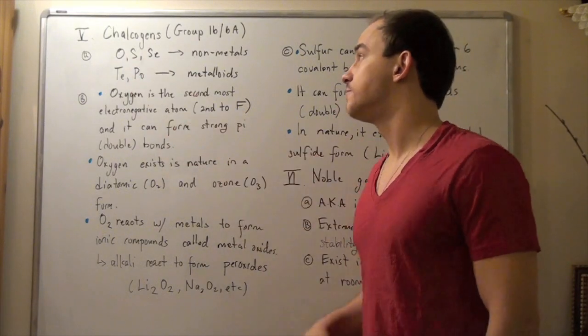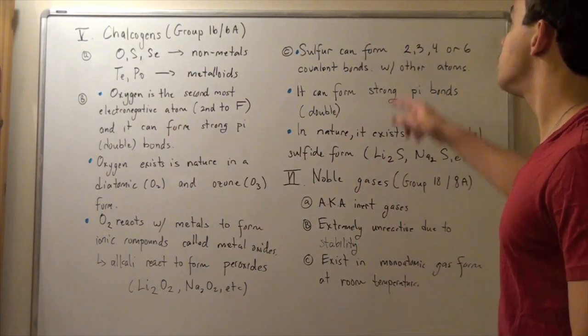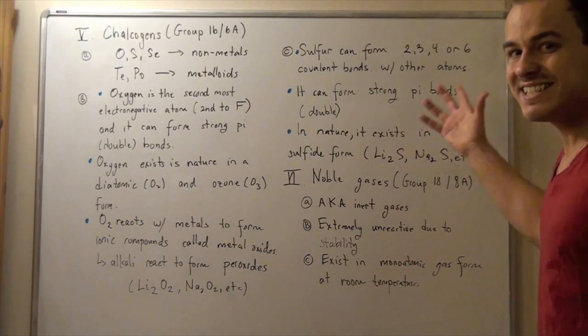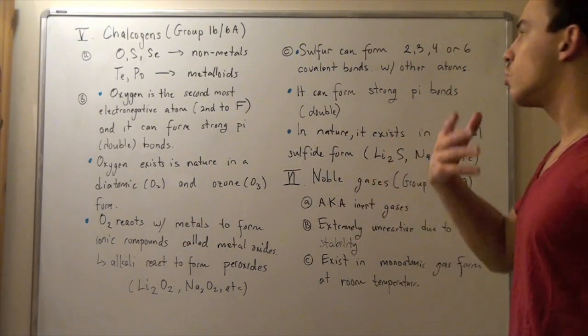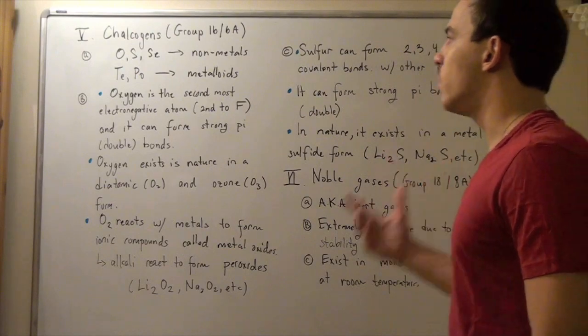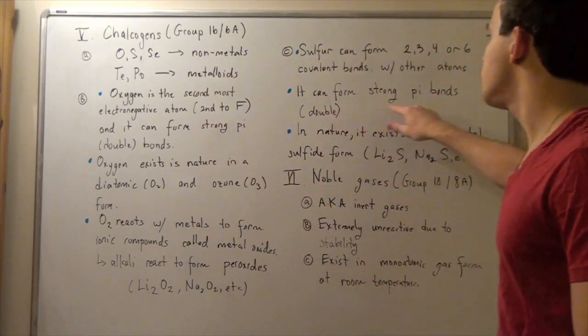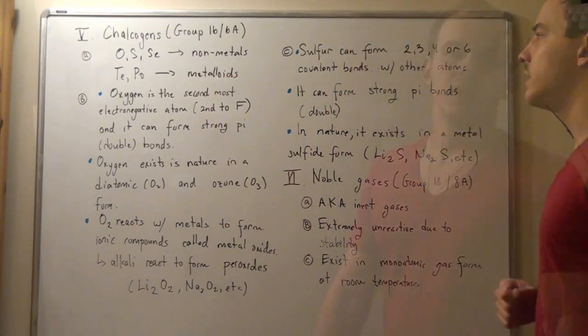Let's look at sulfur. Sulfur can form 2, 3, 4, or even 6 covalent bonds with other atoms or molecules. Also, like oxygen, it can form strong pi bonds, namely double bonds.